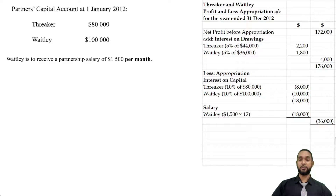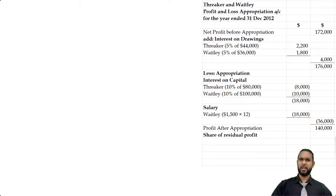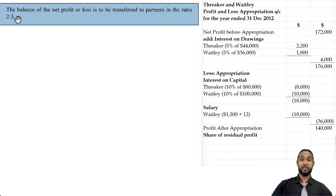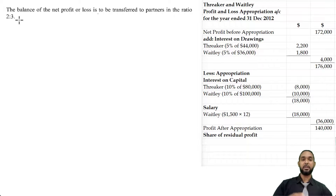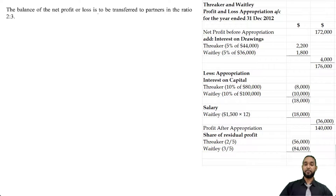Adding the two appropriation items together gives us $36,000, and we subtract that from the $176,000 to get $140,000 — the profit after appropriation — which now has to be shared between the two partners. The ratio is two to three, so we add two plus three to get five, put each number over the total to get fractions: a two-fifths, three-fifths split for Threka and Waitly respectively. We multiply $140,000 by two-fifths for Threka to get $56,000, and by three-fifths for Waitly to get $84,000. Adding those together gives back $140,000, and there's nothing left in the appropriation account.